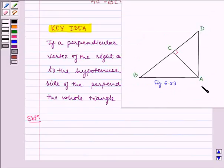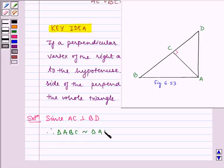Since, in the given figure we can see AC is perpendicular to BD. Therefore, triangle ABC is similar to triangle ADC by the key idea.